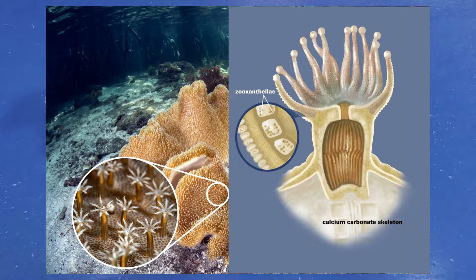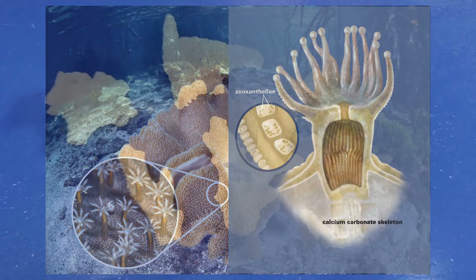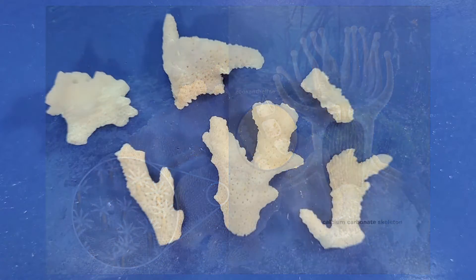The polyp uses calcium carbonate from seawater to build a hard skeleton around itself.